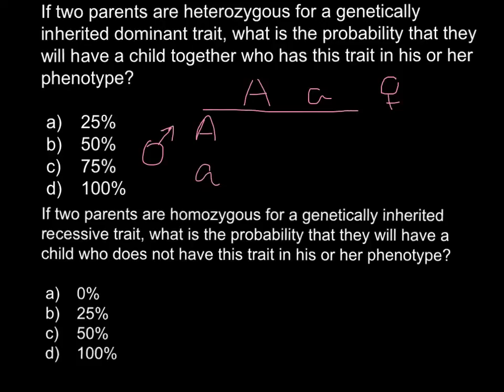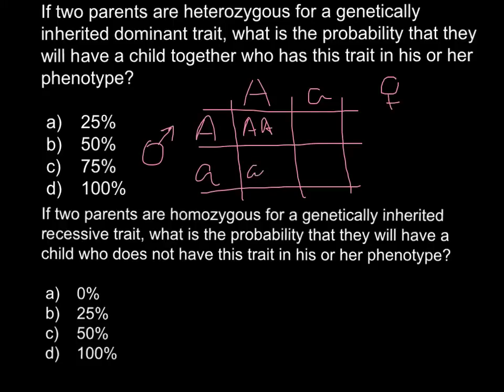So we can build a Punnett square and now we can find all the outcomes of such a cross. So here we have capital A capital A, here we have small a capital A, and capital A small a, and small a small a.